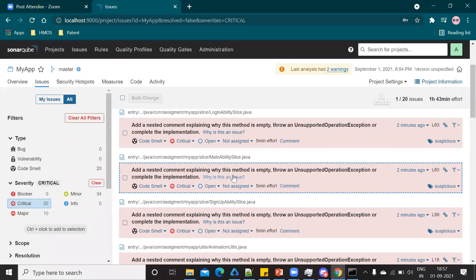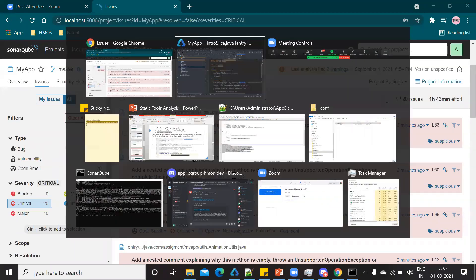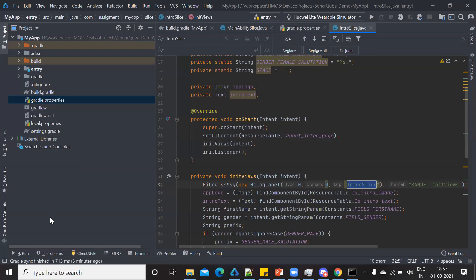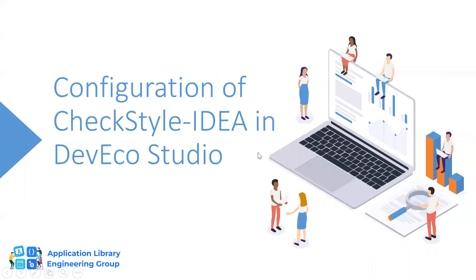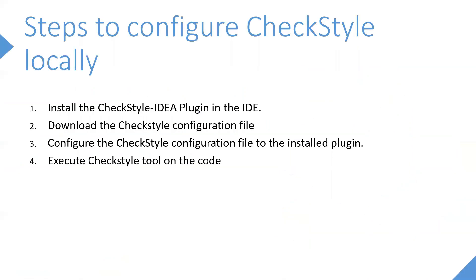That's how you configure SonarQube within the IDE. Now let's move on to the second tool: CheckStyle IDEA. This is a plugin and involves a four-step process: install the CheckStyle IDEA plugin within the IDE, download the checkstyle configuration file, configure the checkstyle configuration file to the installed plugin, and then execute checkstyle on the code.